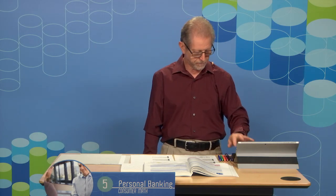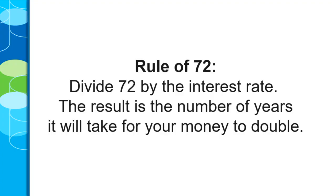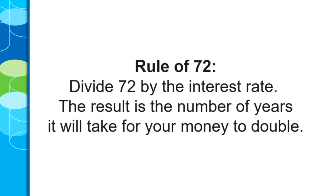Yeah, there's an approximation that you can use. Don't use this on your assignments when you need to get to the nearest dollar. But just in general, there is the Rule of 72. Divide 72 by the interest rate. So if you're getting 1% interest at the bank, you take 72, divide it by 1, you get 72. The result is the number of years it will take for your money to double.